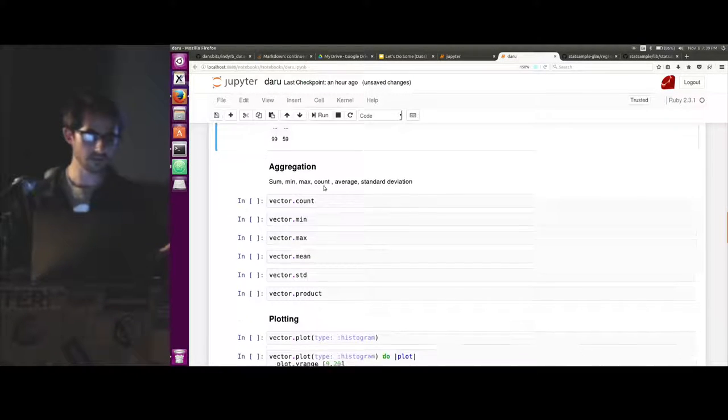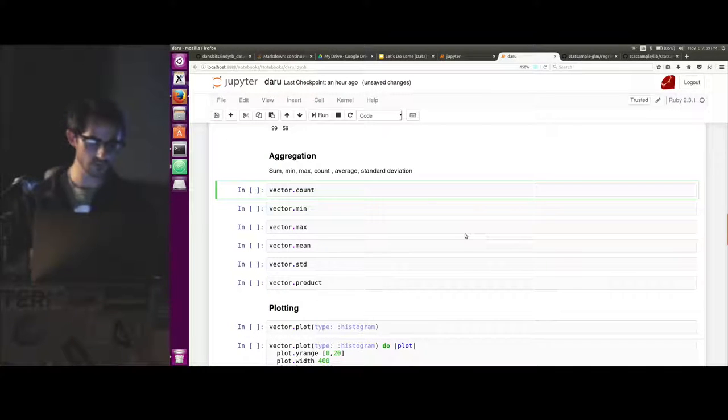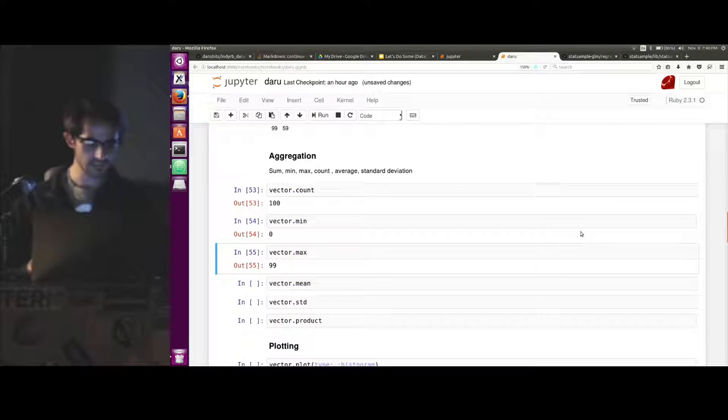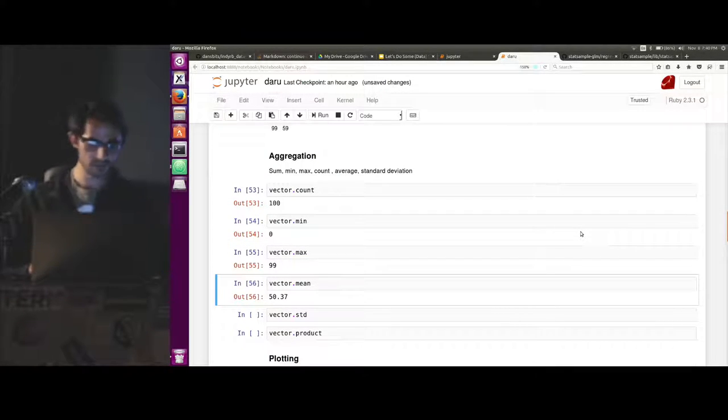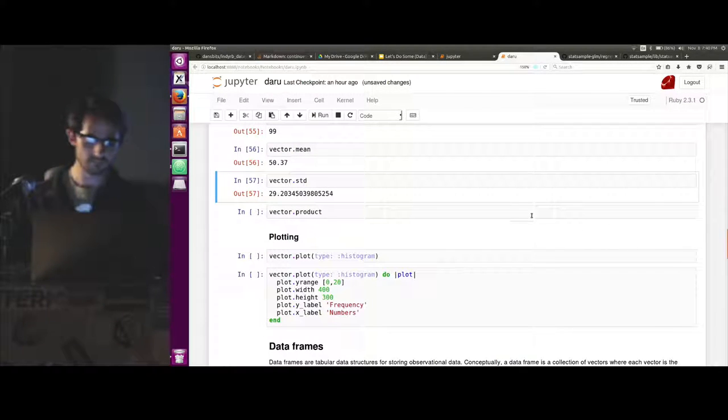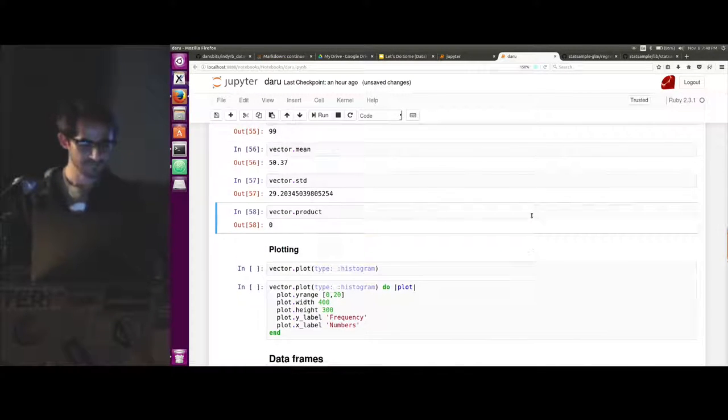But one, it provides a lot of interesting aggregations that you can do. So we can count how many there are. You get that with an array. Min, max, average, standard deviation. You can multiply them all together. There's a zero in there. So it's zero.